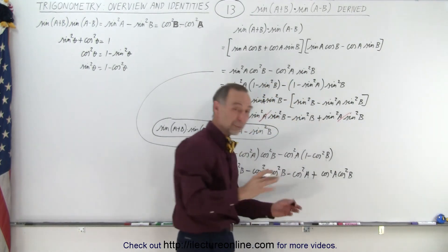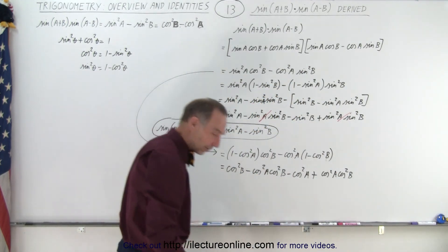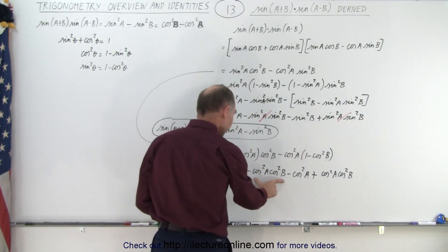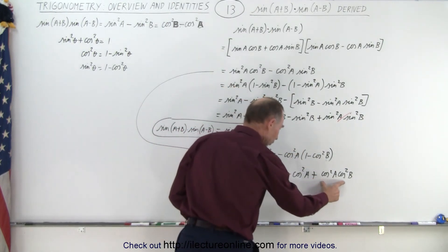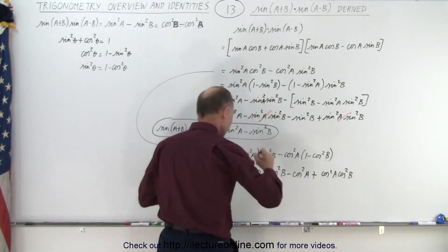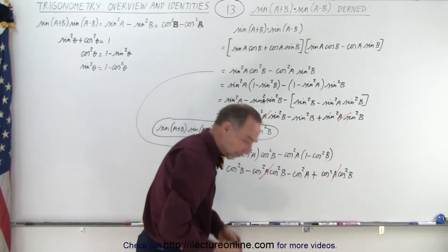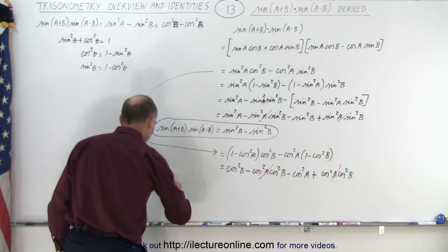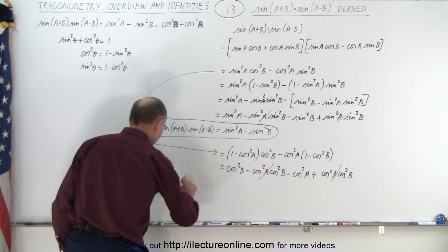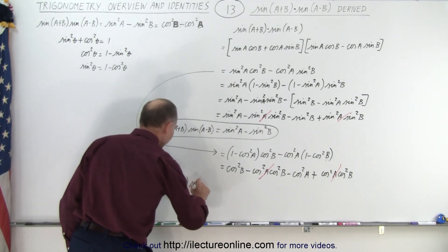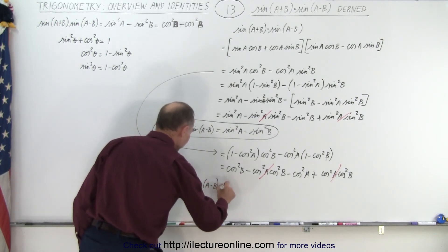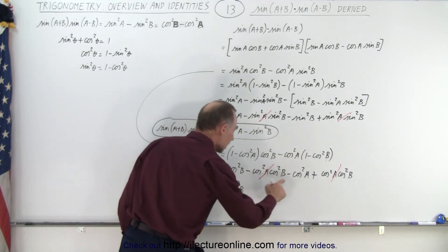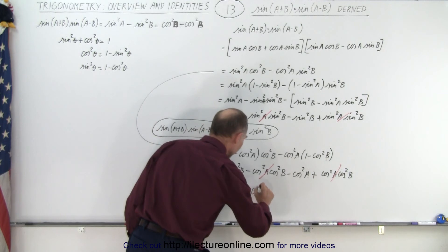The minus cosine squared(A)·cosine squared(B) and plus cosine squared(A)·cosine squared(B) cancel out, leaving sine(A+B) times sine(A−B) equal to cosine squared(B) minus cosine squared(A).